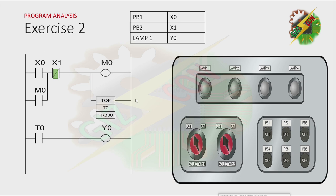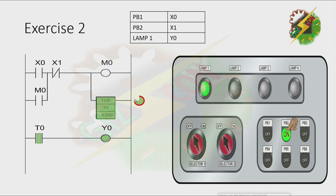Now let's go to our simulation. Let's press PB1, then let's press PB2. And that's it — that's how we solve exercise 2.